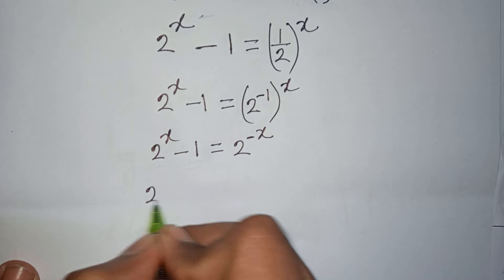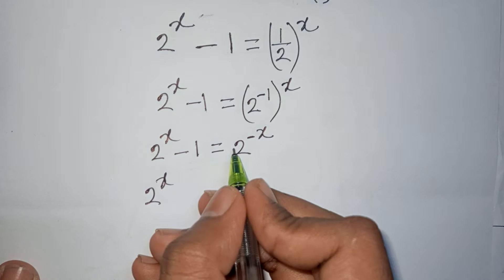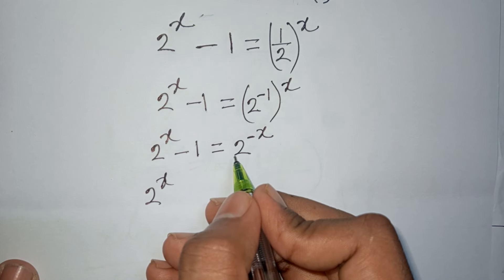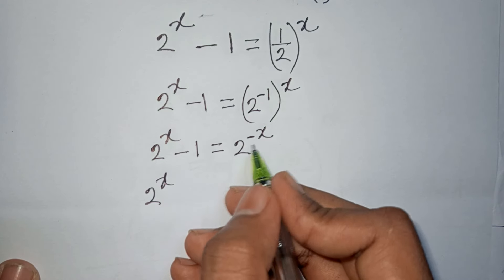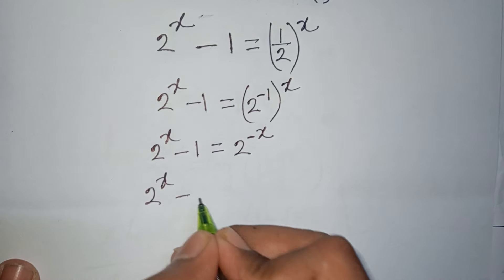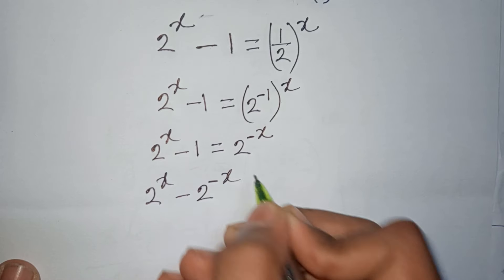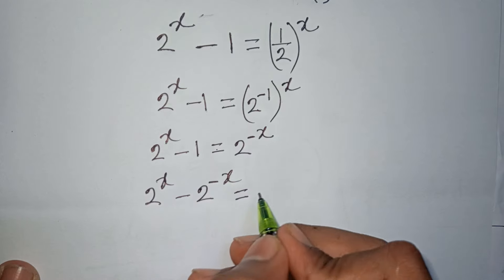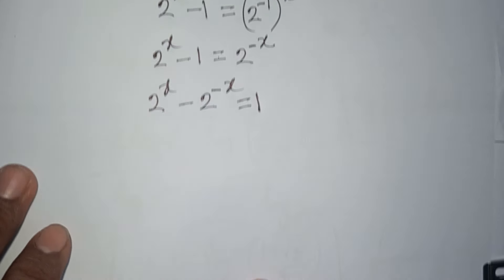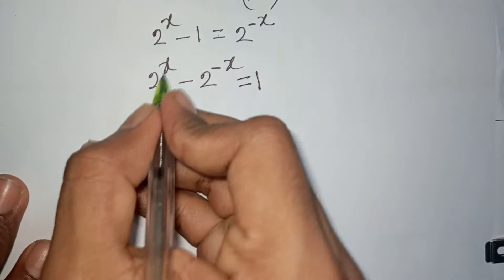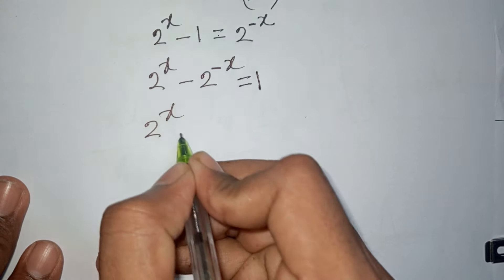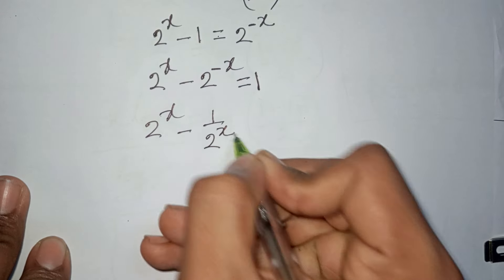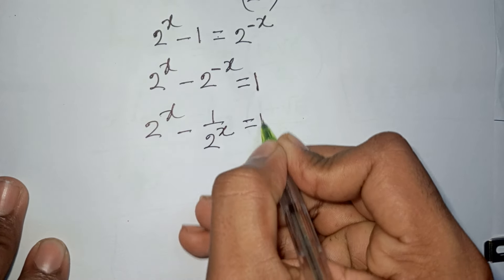We have 2^x minus 2^(-x) equals 1. Moving 2^(-x) to the left side gives minus 2^(-x), and moving the minus 1 to the right side gives plus 1. Note that 2^(-x) is the same as 1/(2^x). So we have 2^x minus 1/(2^x) equals 1.